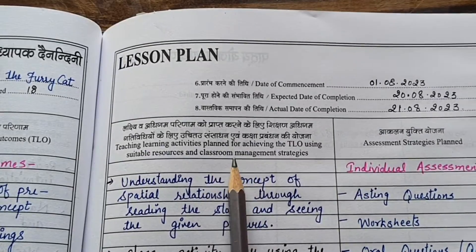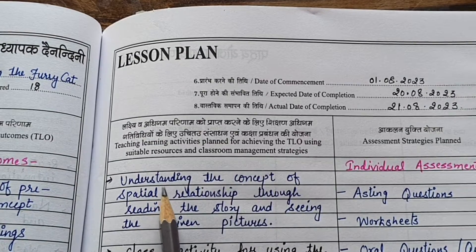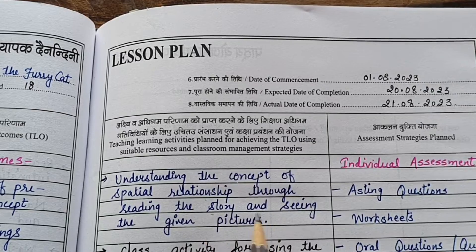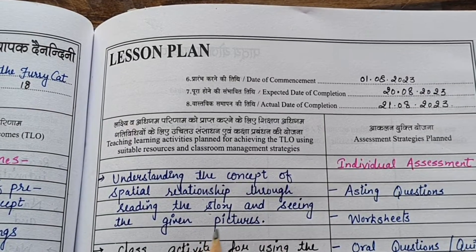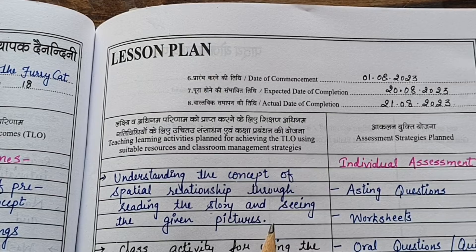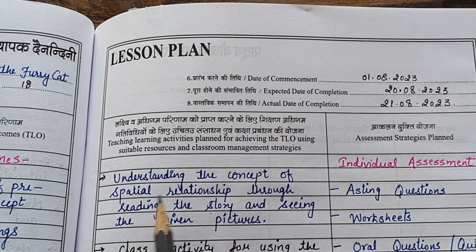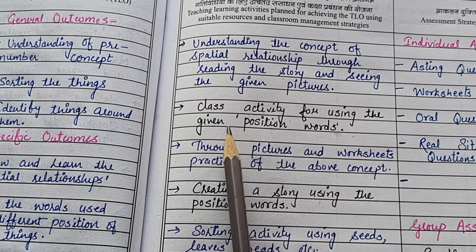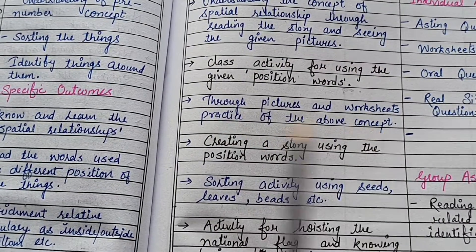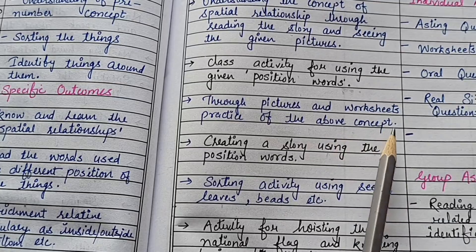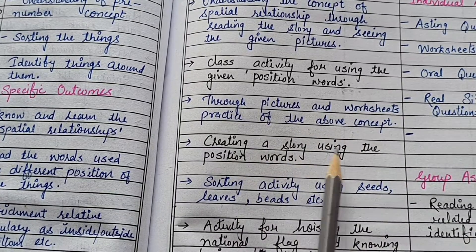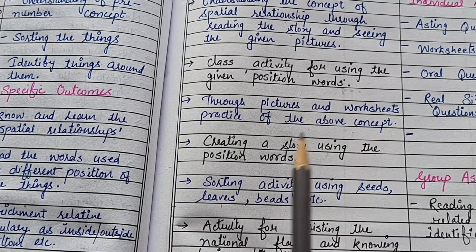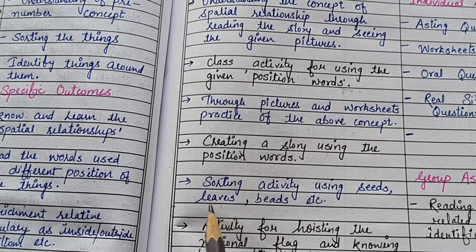Now coming to the activity plan for the topic. First is understanding the concept of spatial relationships through reading the story and seeing the given pictures — as we can see in the textbook, there are many pictures shown for particular spatial words. Then a class activity for using given position words through pictures and worksheets, practice of the above concepts, and creating a story using position words — letting students create their own stories using the given position words in the topic.